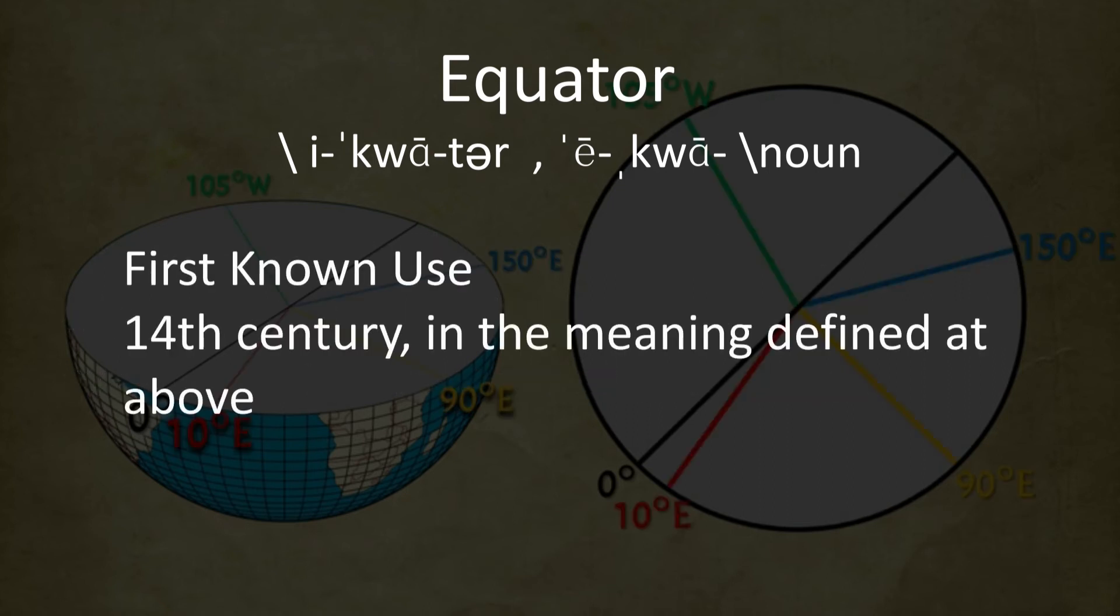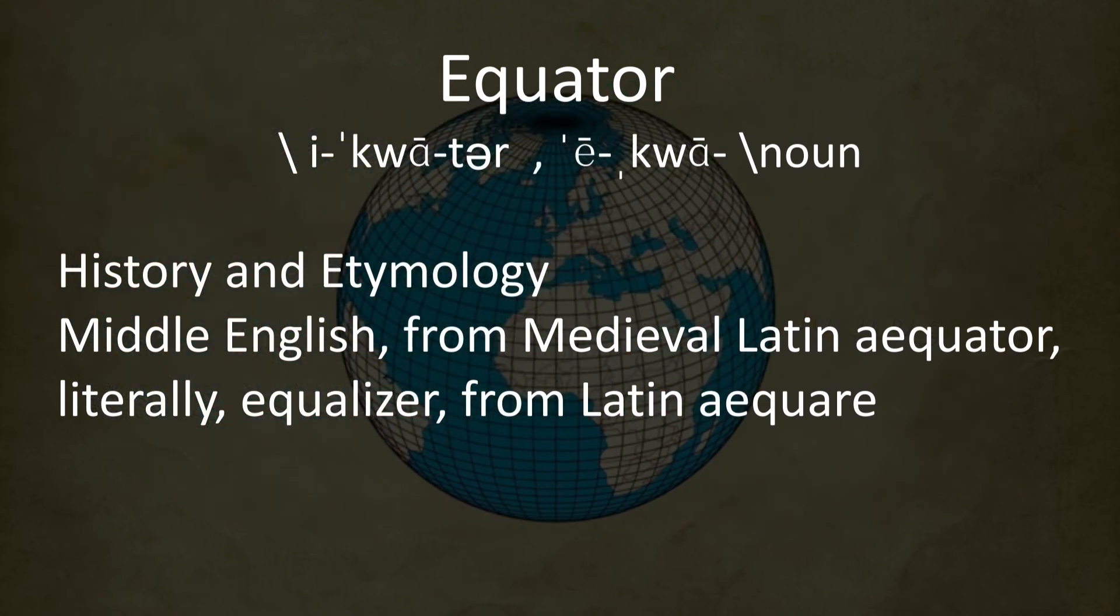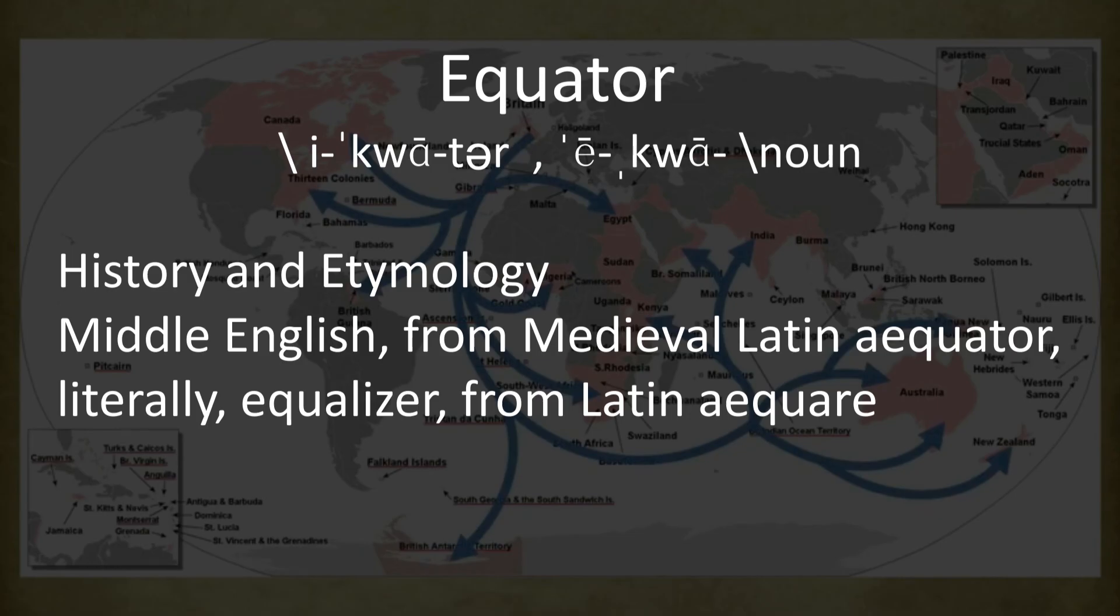First known use: 14th century, in the meaning defined at above. History and Etymology: Middle English, from medieval Latin Equator, literally, Equalizer, from Latin Equaire.